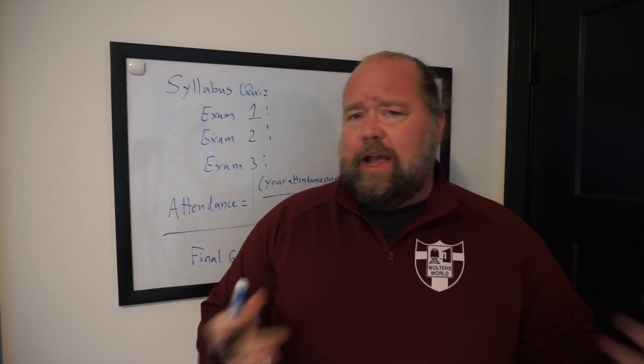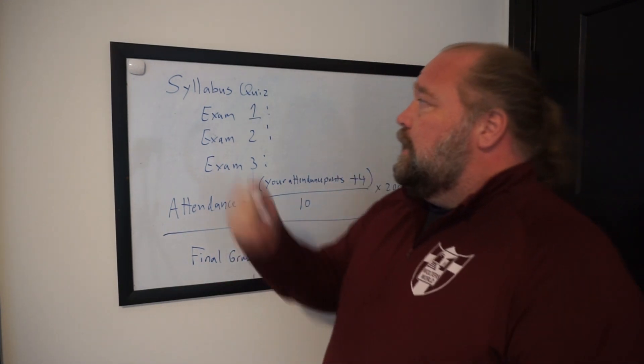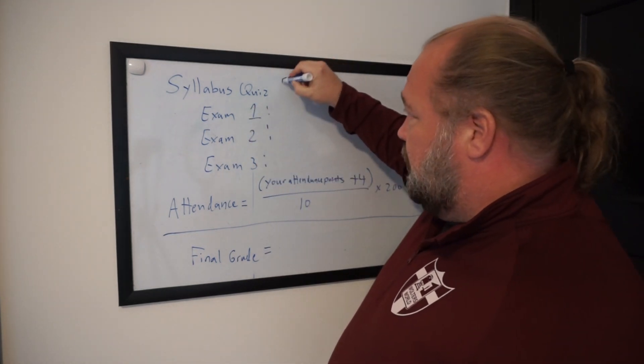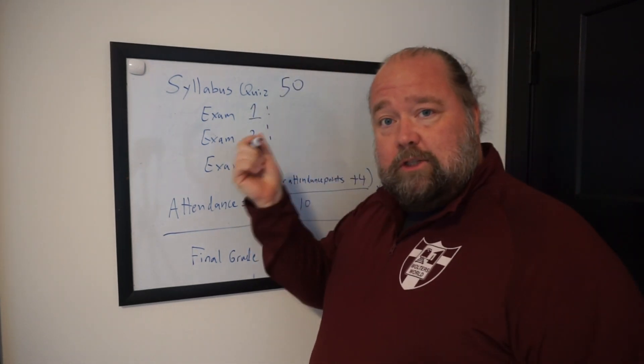Remember, final's optional. If you're happy where you're at, you don't have to worry about it. So look on Canvas. You're going to see your syllabus score. You're going to get your points from that. So let's say you got 50 out of 50 on the syllabus quiz. Good job.